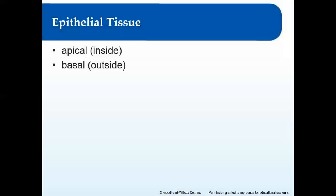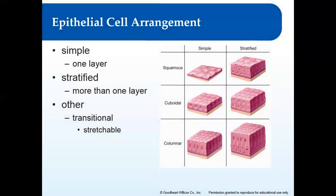Epithelial tissue has an apical and a basal surface. The apical surface is the top, and the basal surface is the base. All epithelial tissue has a basal membrane — that dark purple layer — which is kind of the starting place for the tissue. The apical surface is the top, the basal is the bottom, like a base.